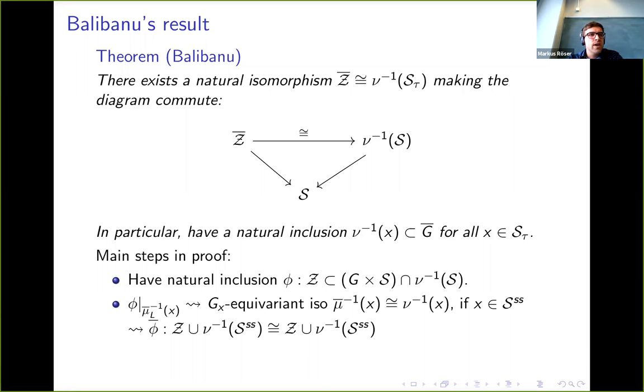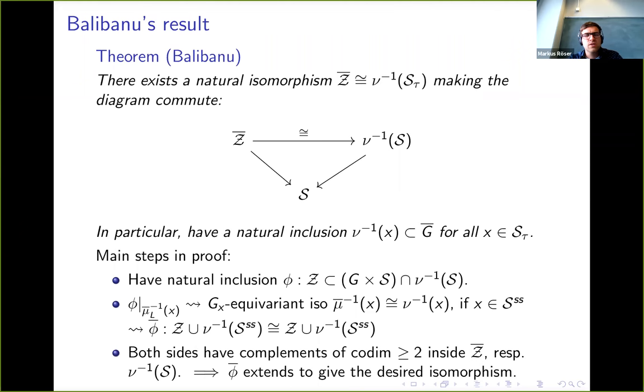These are both toric varieties and the associated fan is basically given by the Weyl chamber. In that way one observes that this inclusion of Z into this family of Hessenberg varieties actually extends to an inclusion of Z̄ union the pre-image of the semi-simple elements. Sorry, this here should actually be μ bar, that's a typo. Now comes the crucial step, which is one observes that both these subvarieties have codimension two inside their respective ambient varieties, and one can then show that actually this isomorphism has to extend across these codimension two complements and give the desired isomorphism. That's basically her proof.